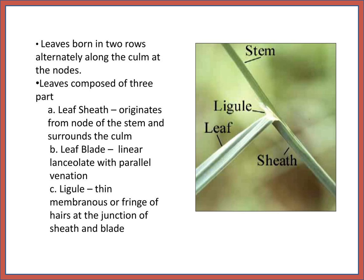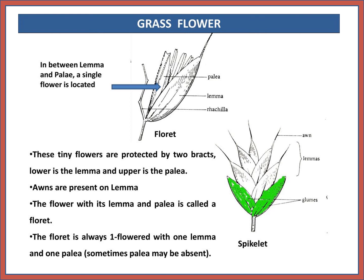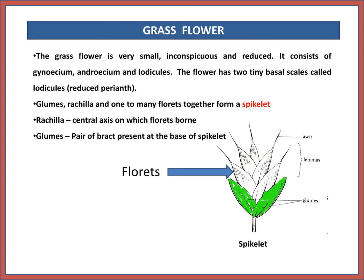Ligule is a thin membranous or fringe of hairs at the junction of sheath and blade. You can observe the ligule in the photograph of grass flowers. You can observe one floret on the spikelet. These tiny flowers are protected by two bracts: the lower is the lemma and the upper is the palea. The floret is always one flower with one lemma and one palea; sometimes palea may be absent. The spikelet contains many florets.